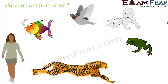Some organisms even crawl. One such example is a small baby — even before a baby learns how to walk, it moves from one place to another by crawling. Crawling is the act of moving on hands and knees, and you can see here how a baby tends to move from one place to another on knees and with the help of hands.